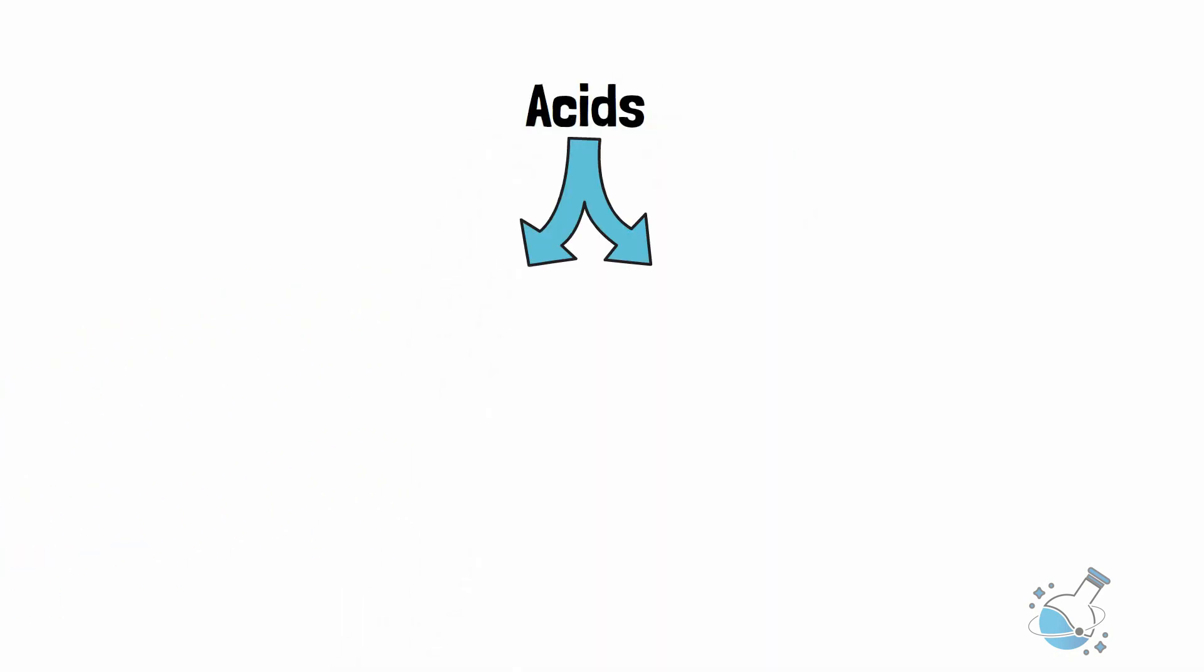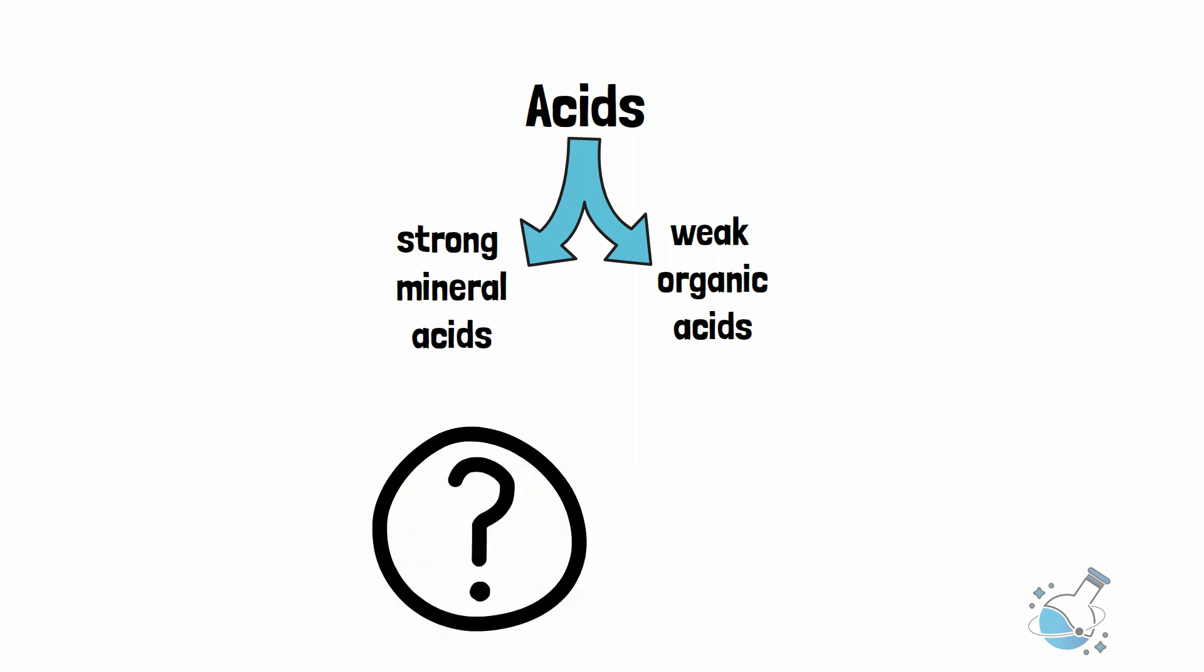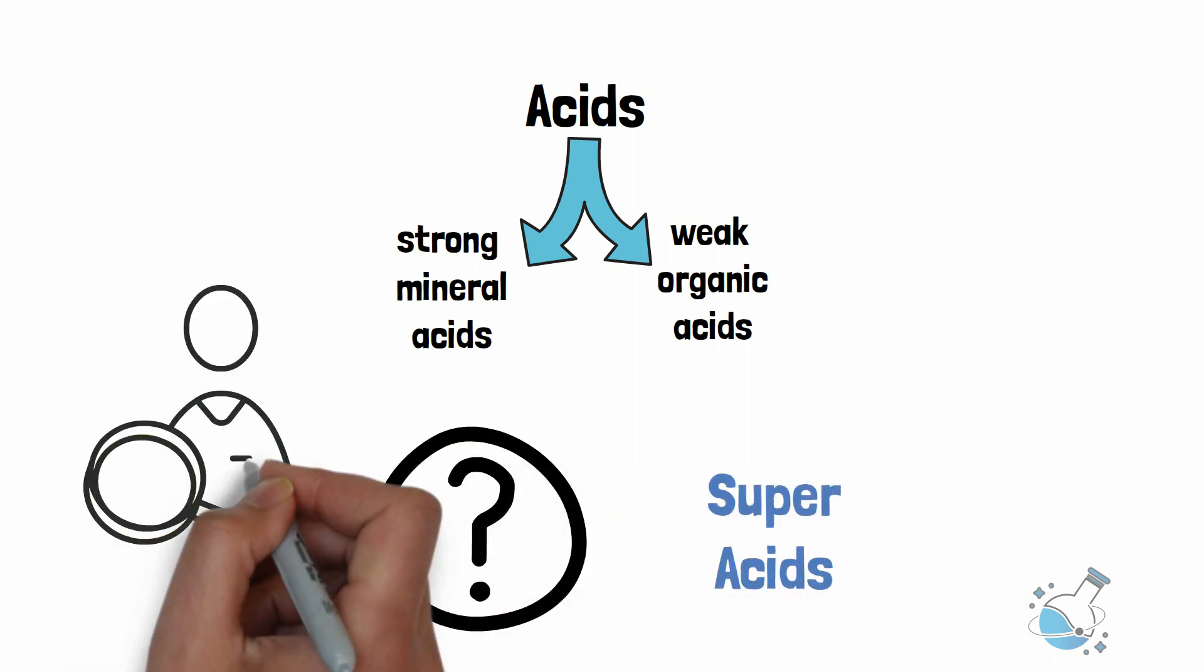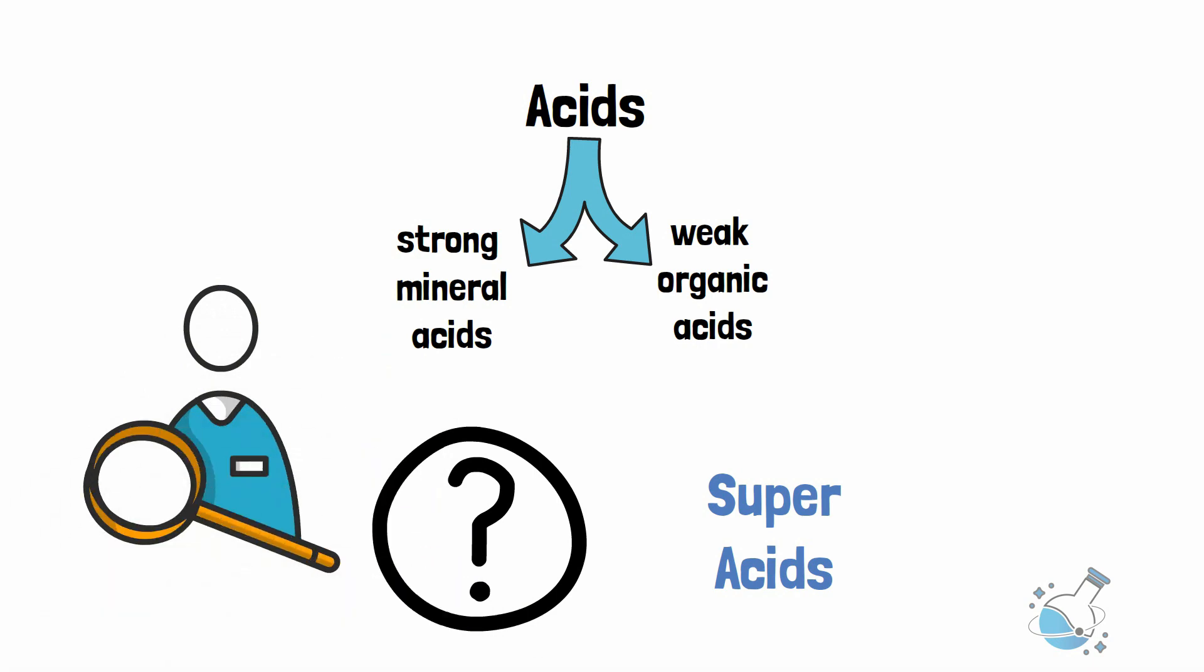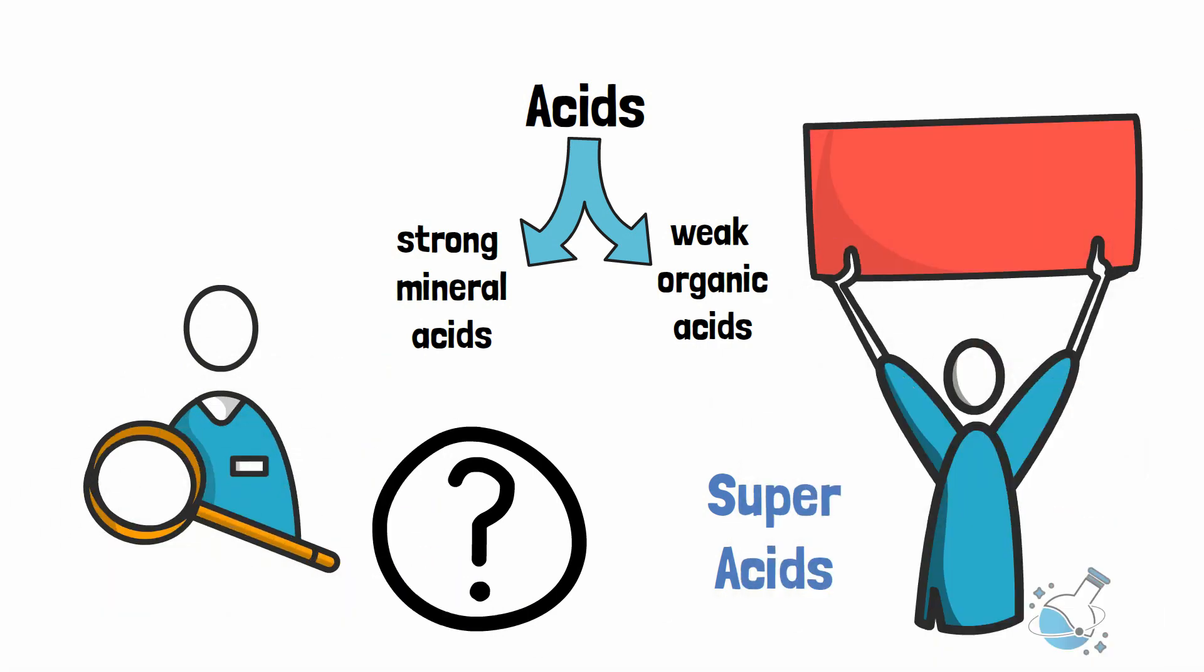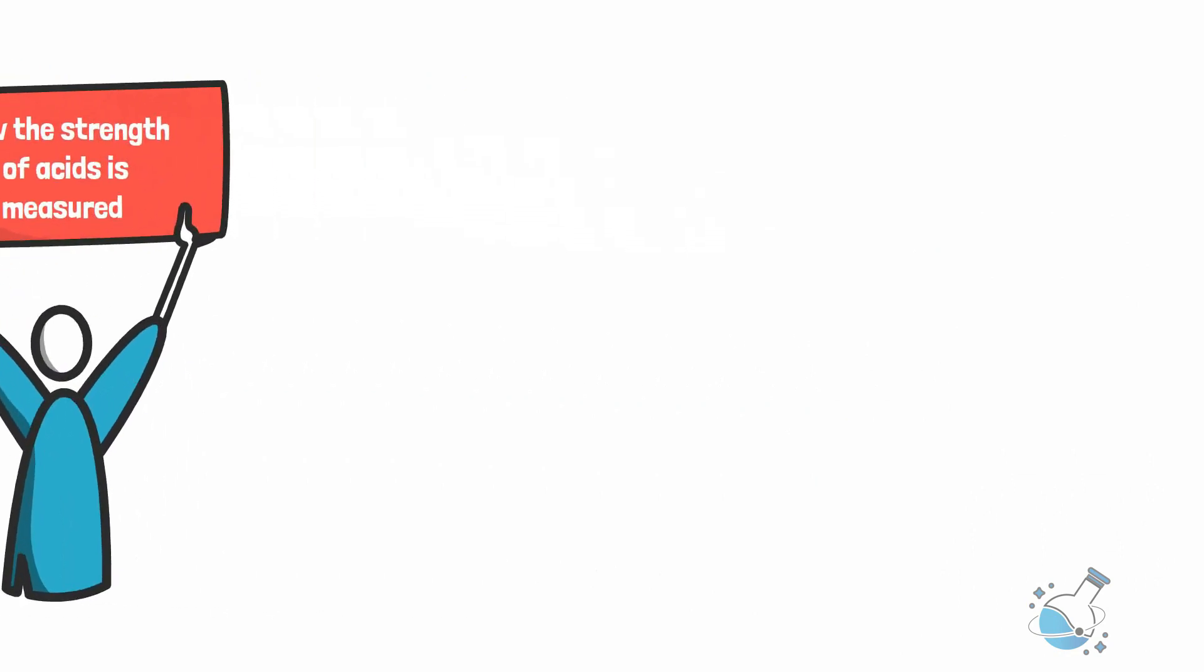Now, there are strong mineral acids and weak organic acids. But there is another type of acid that most of us don't know about. They are called superacids, acids that do not belong in this common classification. But before going there, we have to know how the strength of acids is measured.